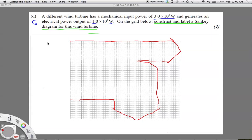This is question 8.7 part 3. A different wind turbine has a mechanical input power of 3 × 10^5 watts and generates an electrical power output of 1 × 10^5 watts. On the grid below, construct and label a Sankey diagram for this wind turbine.